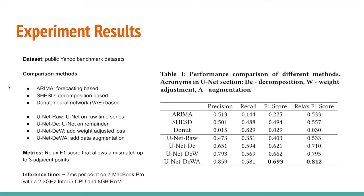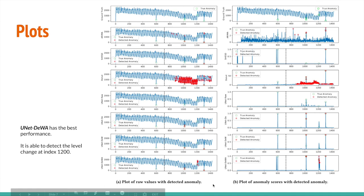Then, we conduct the experiments on a public dataset. We also use an ablation test starting from U-net on the raw time-series. Then, we use the remainder on the U-net. Then, we incorporate the weight adjustment as well as the data augmentation. As we can see, the F1 score increased from 0.4 to 0.69.